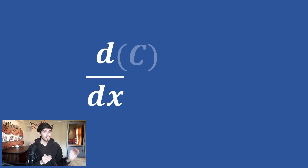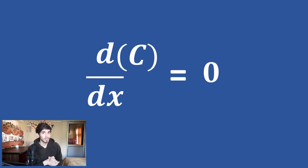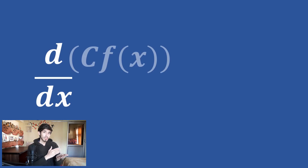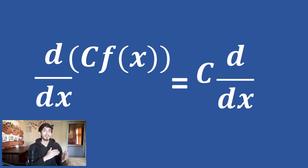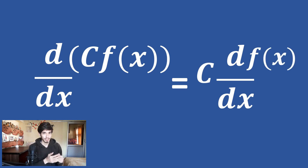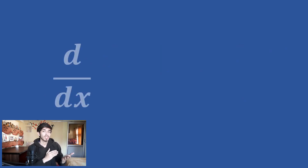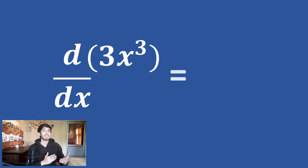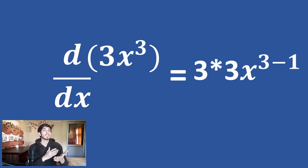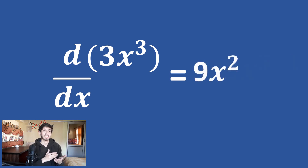Differentiation of a constant is 0, because a constant is not changing, so its differentiation will simply be 0. Differentiation of a constant times some function is the constant multiplied by the differentiation of that function. For example, differentiation of 3x cubed is 3 times the differentiation of x cubed. Differentiation of x cubed is 3x squared, so 3 times 3x squared is 9x squared.